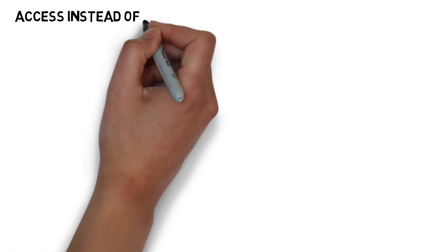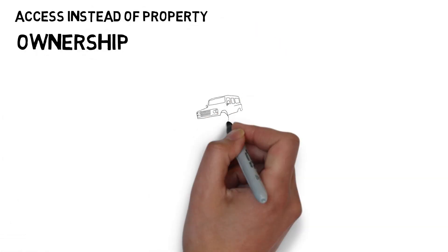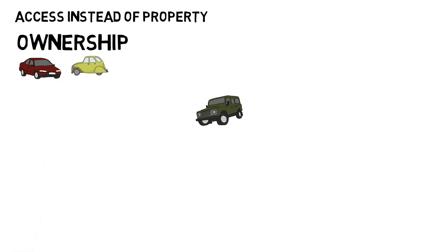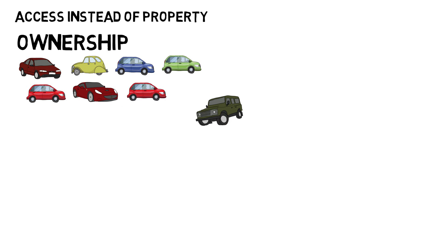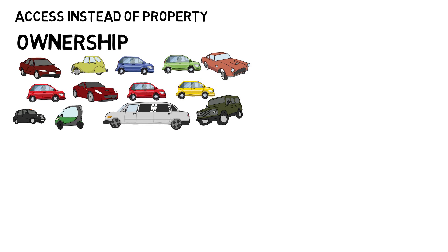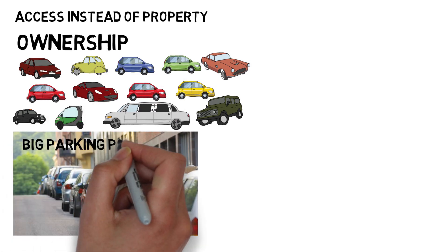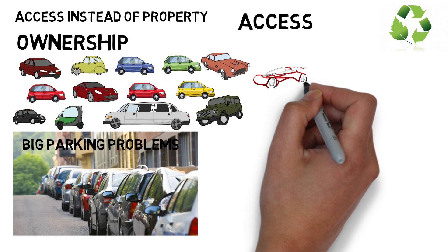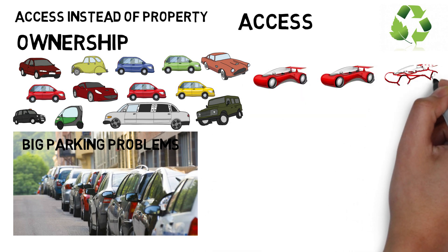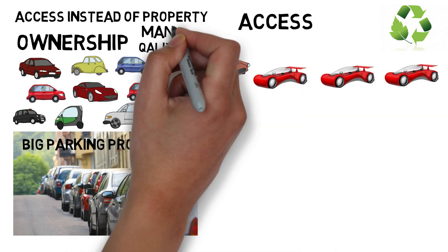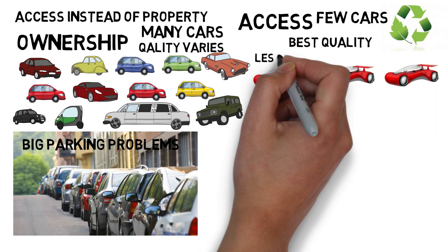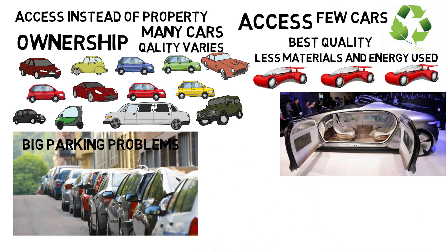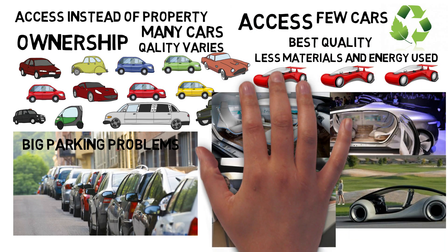In an RBE, we replace ownership with access. Access-based instead of property-based systems help us minimize the amount of resources we use. For instance, everyone owning their own car that is used on average 5% of the time and parked 95% of the time, occupying parking space, is not really efficient. But this is the reality today. Instead, it would be better to share all cars. Because fewer cars are needed, we save materials and energy on production — materials and energy that could be used elsewhere to enhance the living standards of everyone.